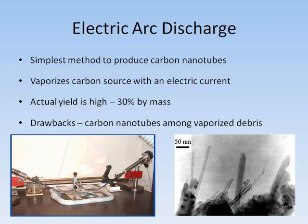The drawback to this method is that the carbon nanotubes are among a complex mixture of other materials. Therefore, more work is required in the actual separation of the carbon nanotubes from its byproducts. The yield using this method is around 30% by mass, in regard to all the products of the reaction.